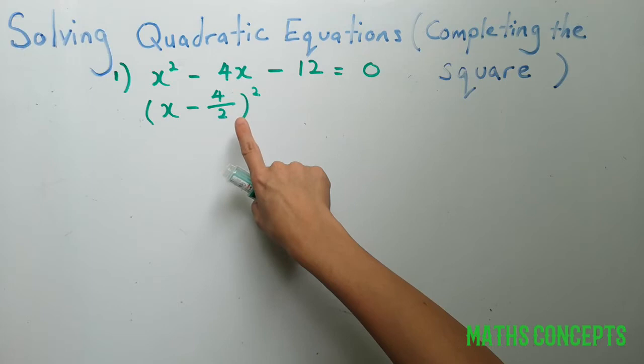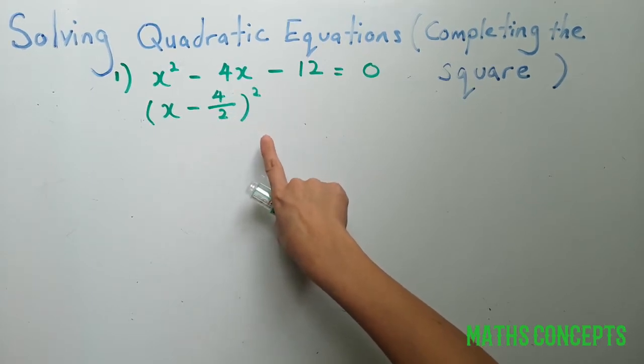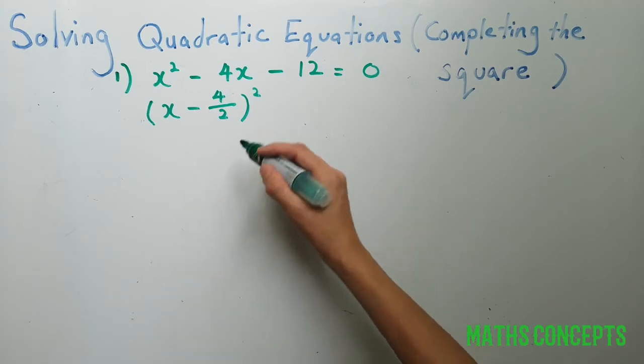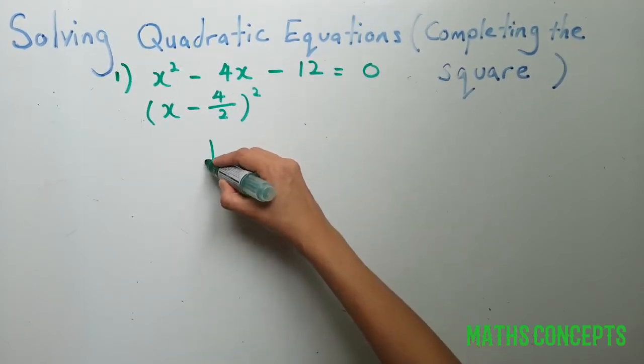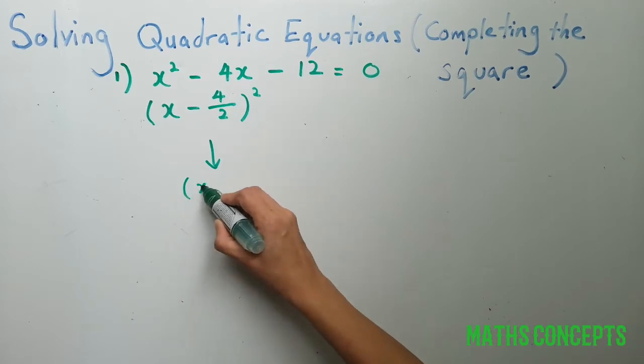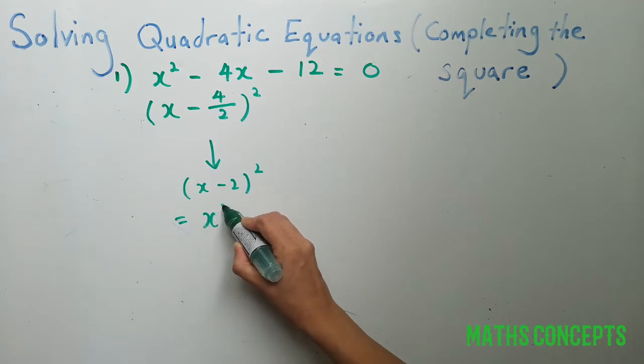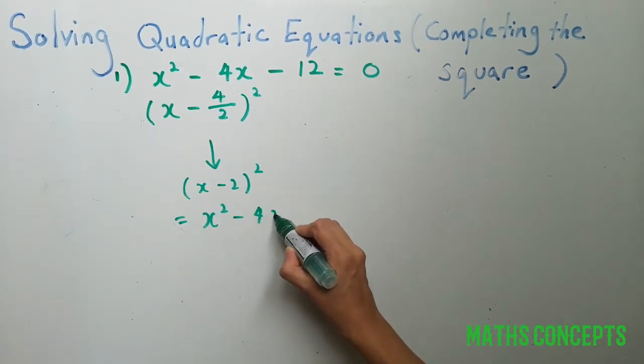The reason for doing so is because when you try to expand this term, you actually have x minus 2 squared, which is x squared minus 4x plus 4.